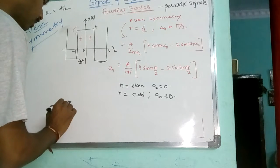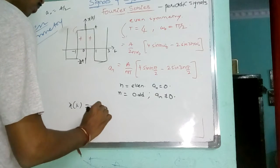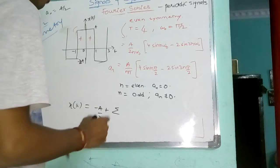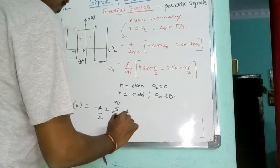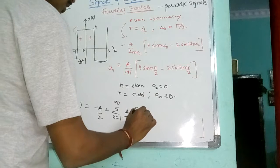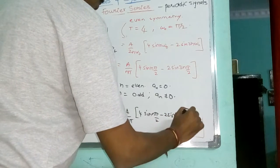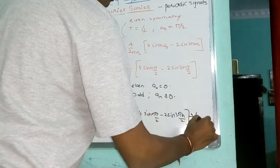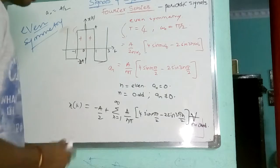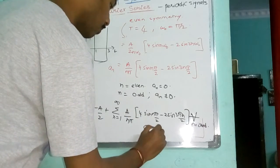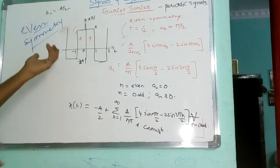So, now I can write X of T as the Fourier series: minus A by 2, plus summation of N equal to 1 to infinity, A by N pi into 4 sin N pi by 2, minus 2 sin N 3 pi by 2, for N equal to odd. So, this is for the even symmetry problem.